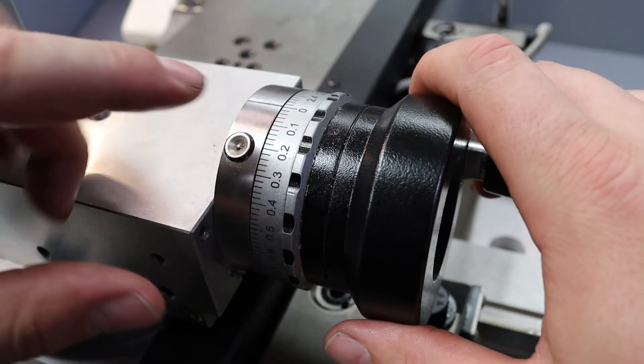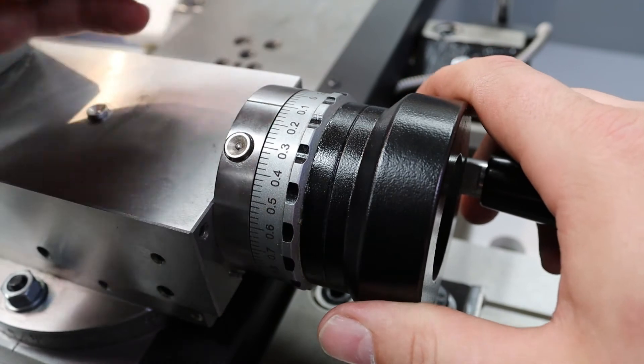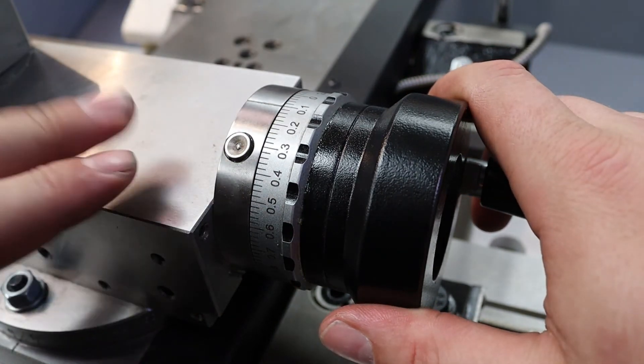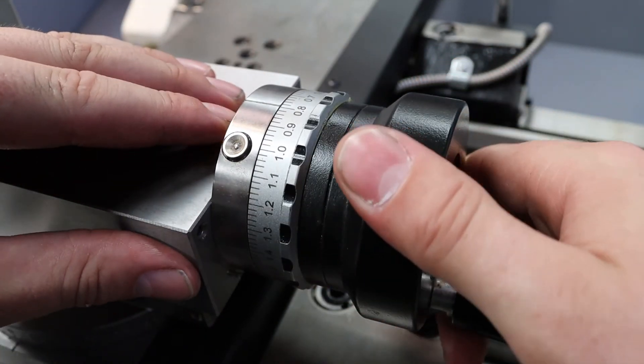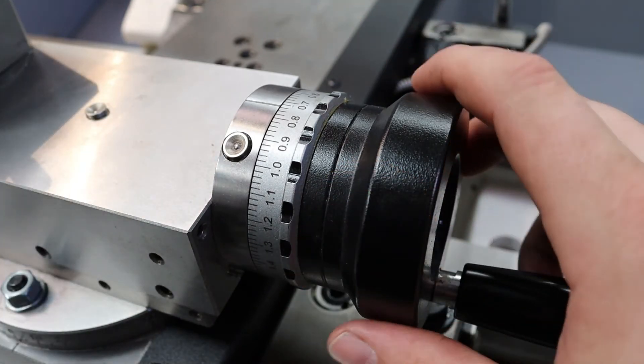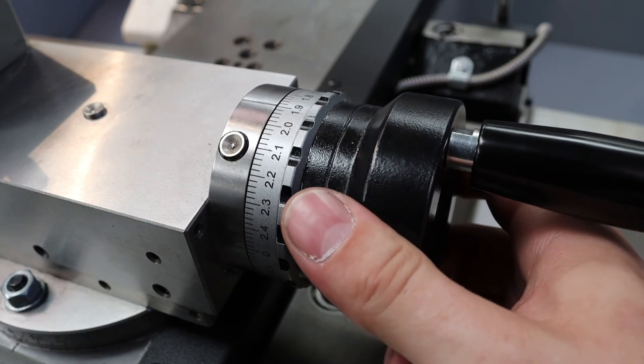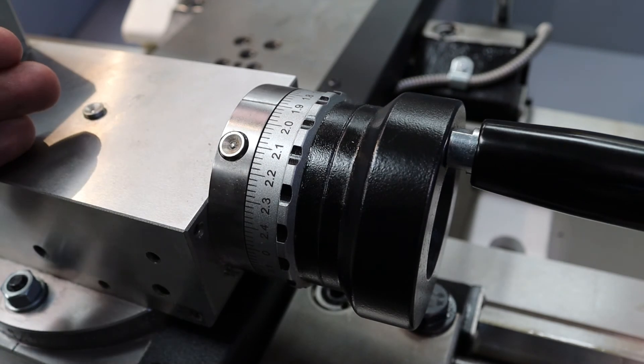So if I was to move from zero to 0.1, I know I've moved 0.1 of a millimeter forward on the cross slide. If I move to 0.7, I know I've moved 0.7 of a millimeter. And if I go to 1.9, I know I've moved 1.9 millimeters forward.